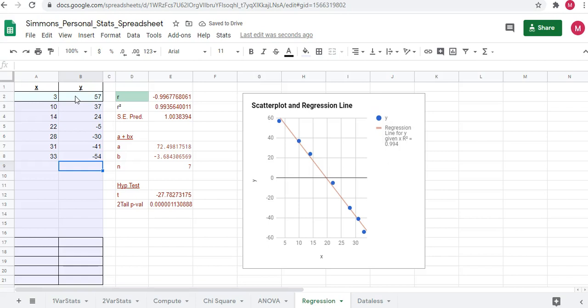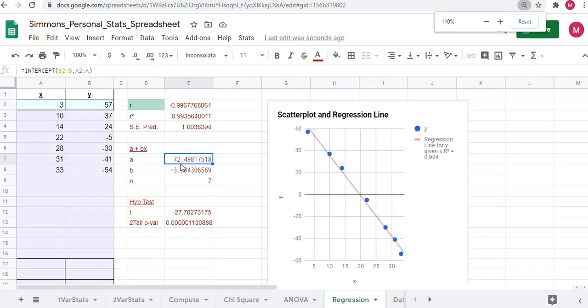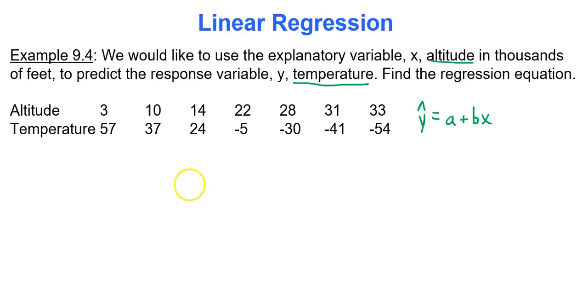Definitely make sure you type in the correct numbers. It would be a shame to miss a question just because you mistyped one number. You can also copy and paste data from your homework into an Excel spreadsheet and then move it over into this Google Sheets document as well. The only thing we're worried about currently is the value of a and b. So a has a value of 72.5, and then b has a value of negative 3.68. So we have y hat equals 72.5 minus 3.68x. If linear correlation holds, we'll be able to use this equation to make predictions of temperature based on input x altitude.